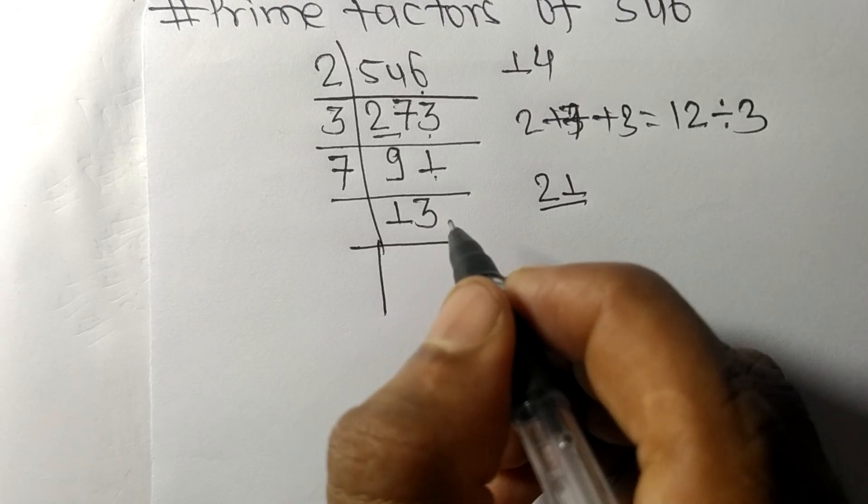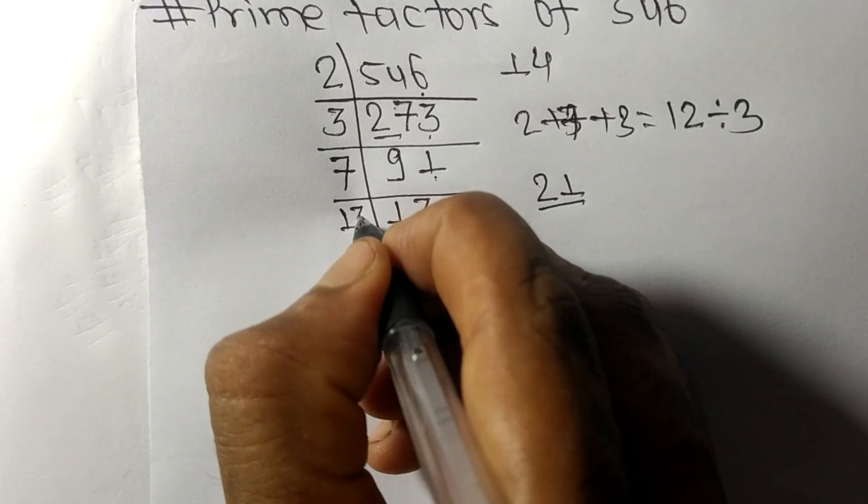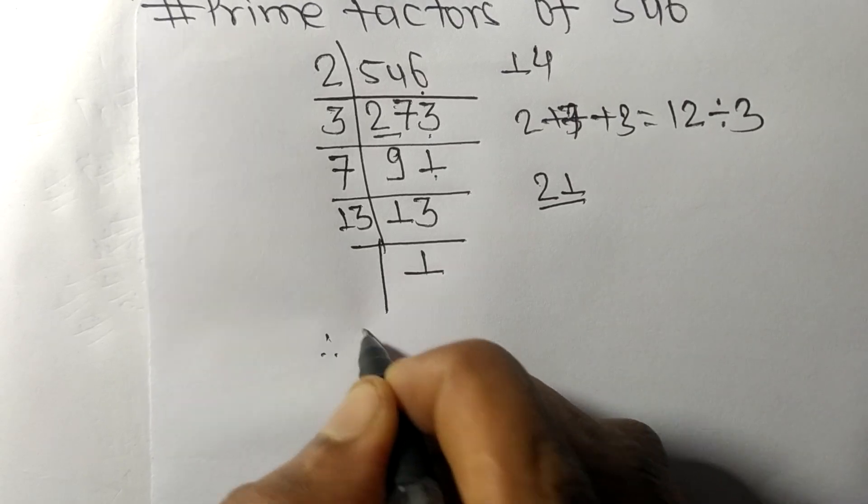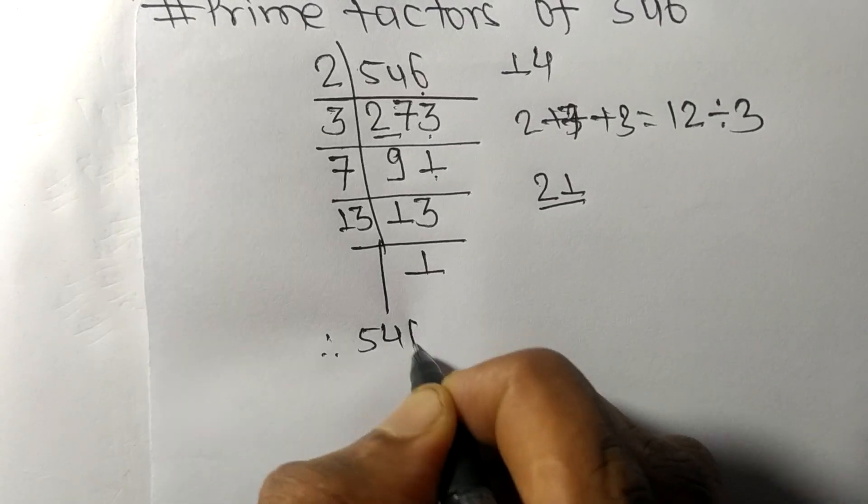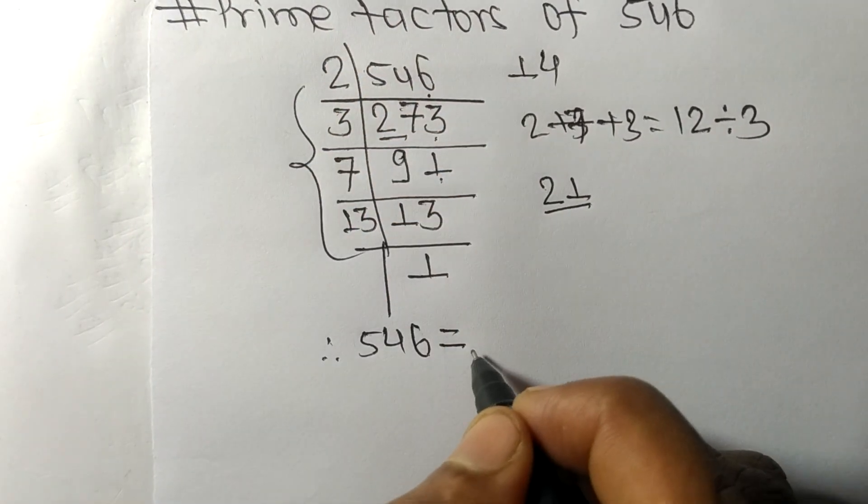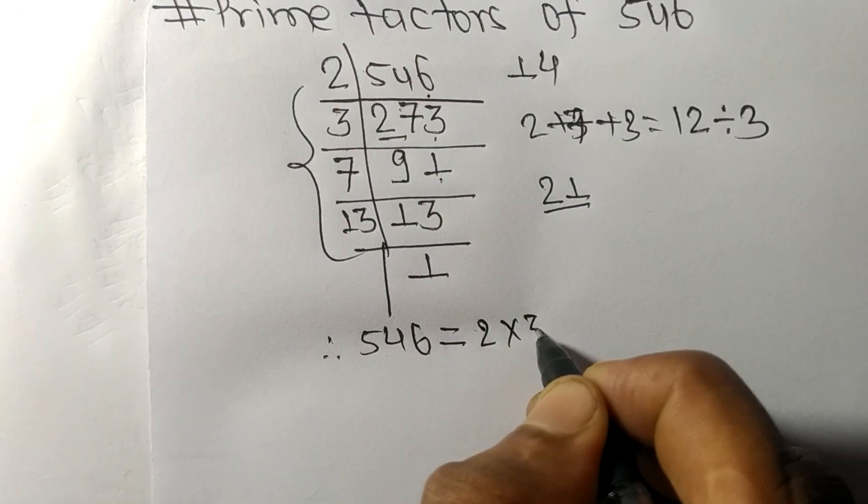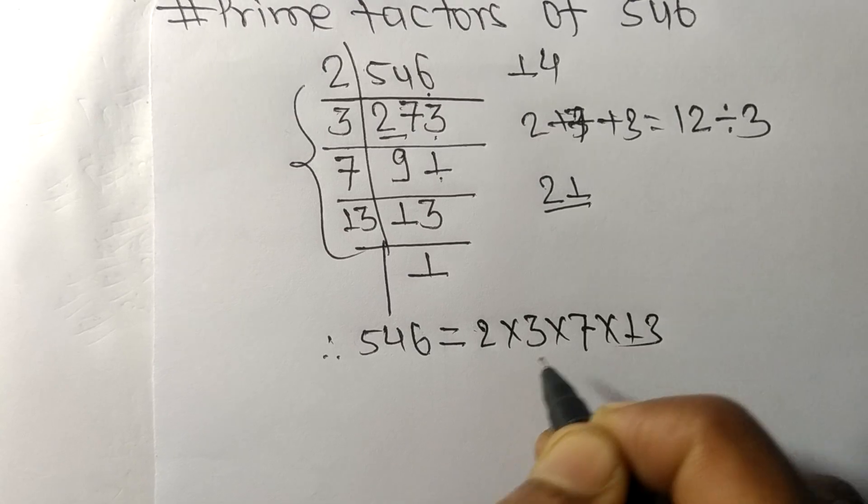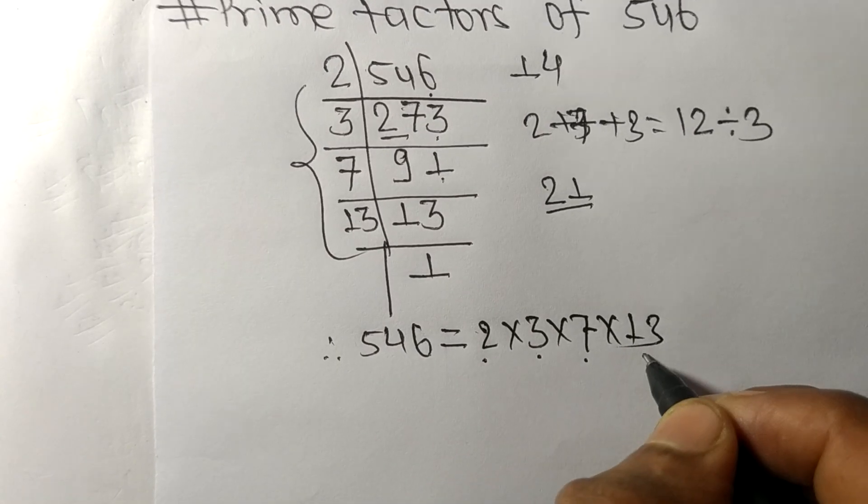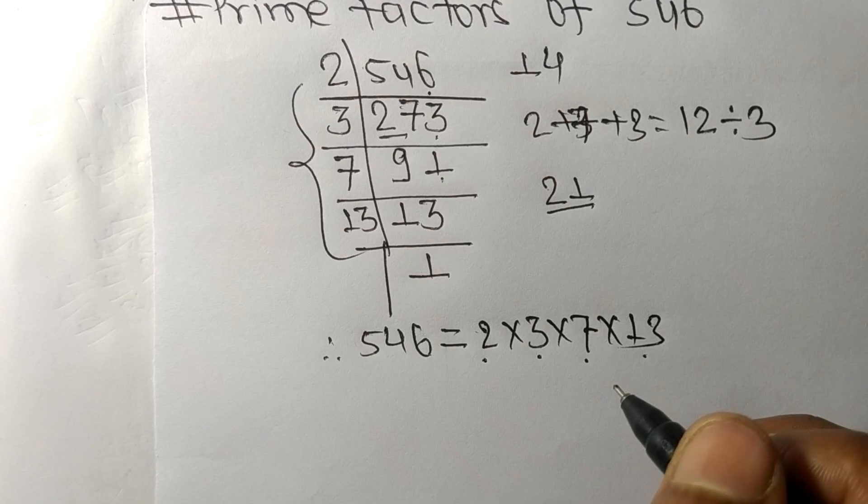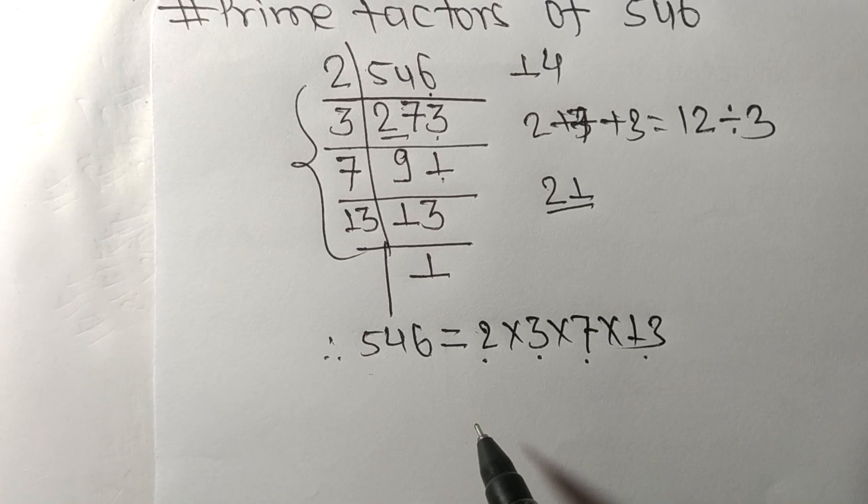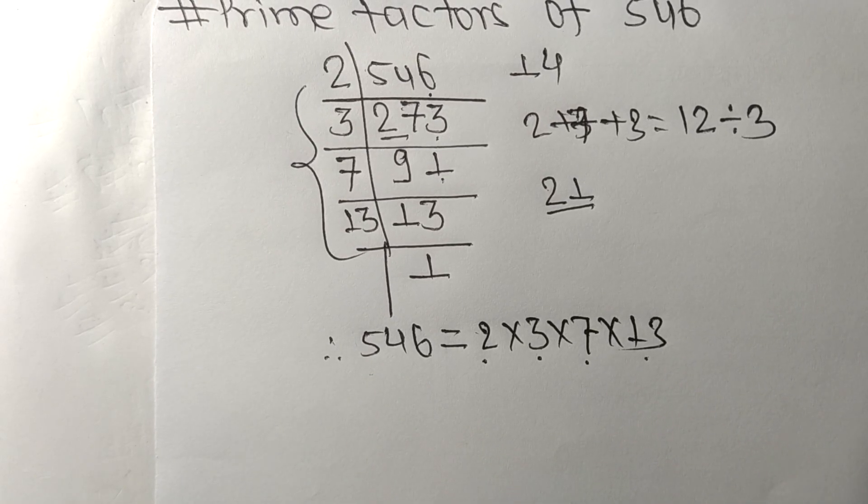Since 13 is prime, it is divisible by itself, and we get 1. Therefore, 546 equals 2 times 3 times 7 times 13. So 2, 3, 7, and 13 are the prime factors of 546. Thanks for watching!